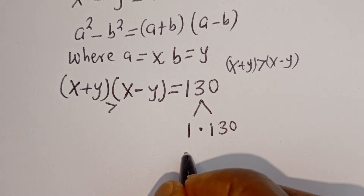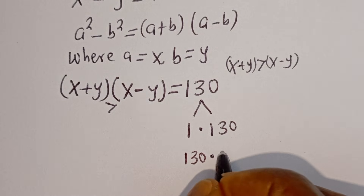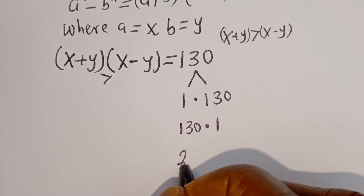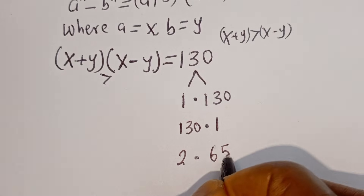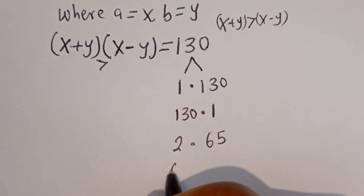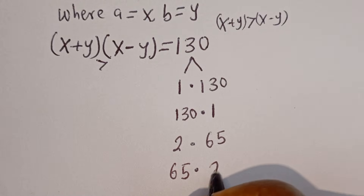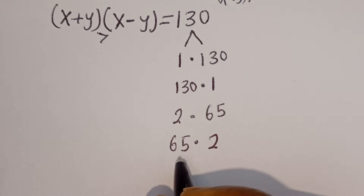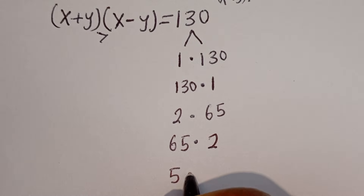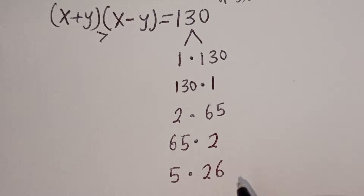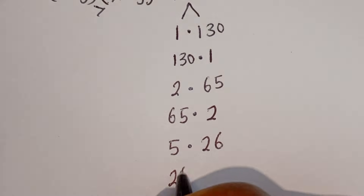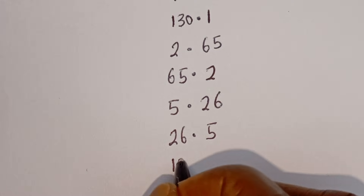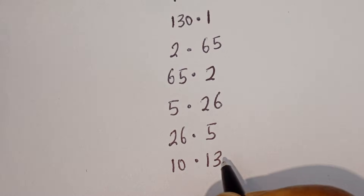The factor pairs of 130 are: 130 × 1, then 2 × 65, then 65 × 2, also 5 × 26, then 26 × 5, then 10 × 13, and 13 × 10.